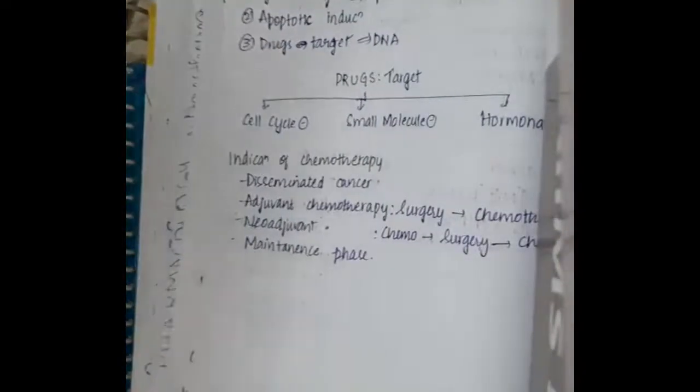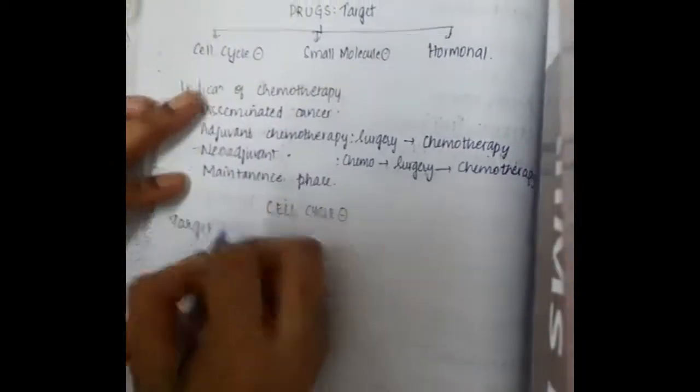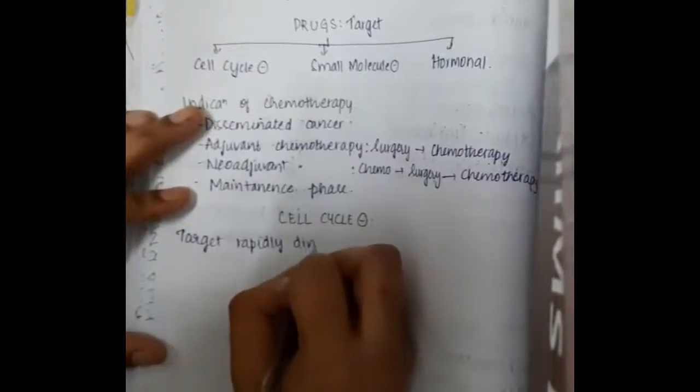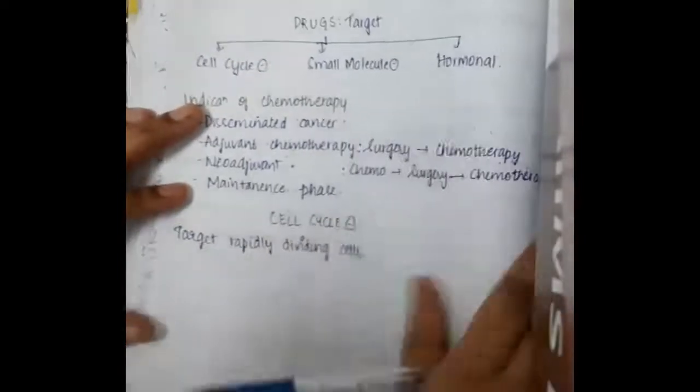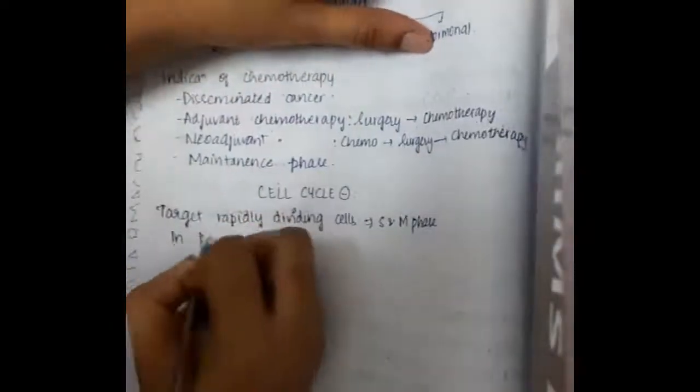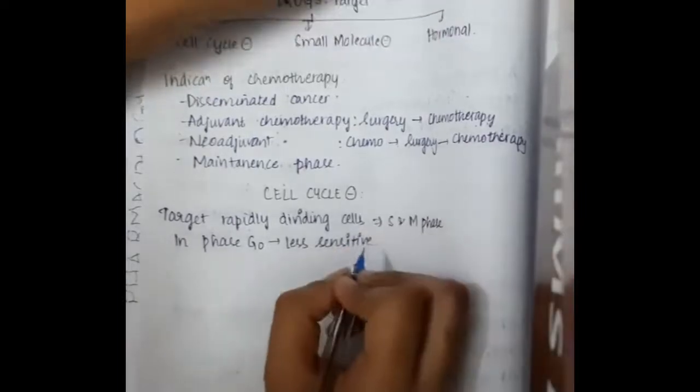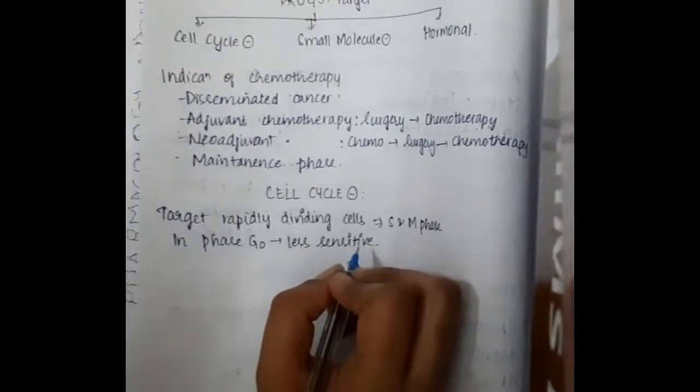First we will learn about the cell cycle inhibitors. These cell cycle inhibitors target rapidly dividing cells like S and M phase. In the G0 phase, they are less sensitive.